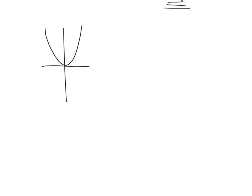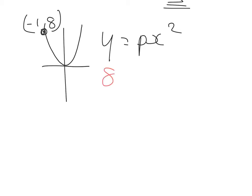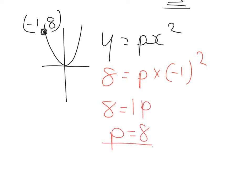Example 5 — we're going through the point (-1, 8) and it's y equals px squared; find the value of p. When x equals -1, y equals 8. Substituting: 8 equals p times (-1) squared, which is 1, so 1p gives p equal to 8.